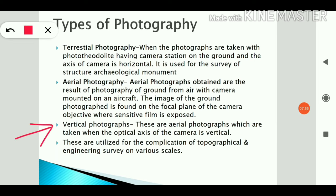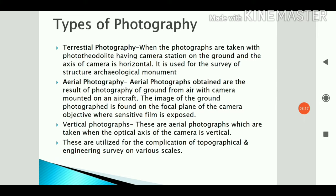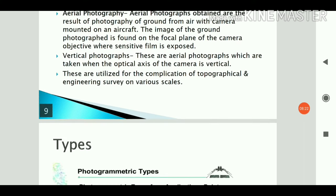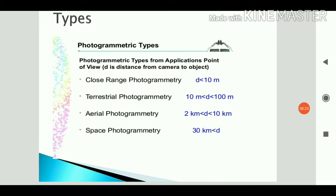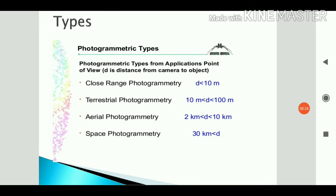In aerial photography there are three types: vertical, tilted, and oblique. In vertical photography the camera axis is vertical. These types are utilized for topographical and engineering surveys at various scales. From an application point of view, photogrammetric types are classified by the distance from camera to object.